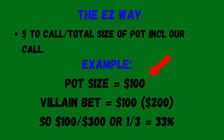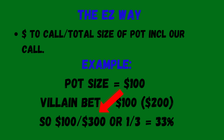If the pot has $100 in it, the villain bets $100, then it's going to cost us $100 to win a $300 pot. So all we do is take what it's going to cost for us to call, which is $100, and we divide that by the total size of the pot, including our potential call, which equals $300. So in this case, we're dividing the call, or $100, by the total potential size of the pot, which is $300. Or we can just do 1 divided by 3, which equals 33%. Really easy, right?